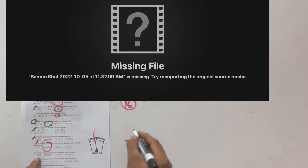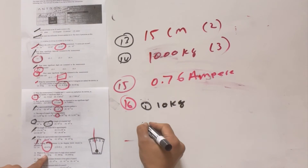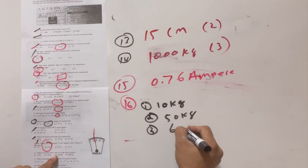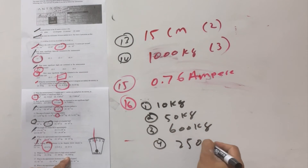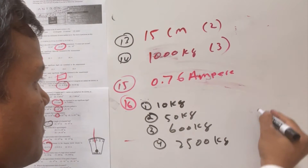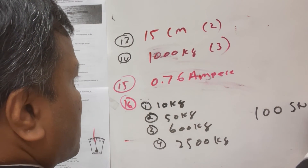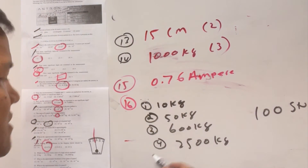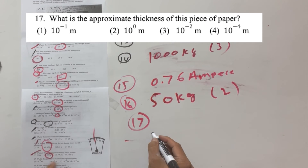Number sixteen: the mass of a high school student. Options are 10 kg, 50 kg, 600 kg, and 255,000. If you randomly chose 100 high school students and averaged their mass, it would be close to 50 kg — option number two.